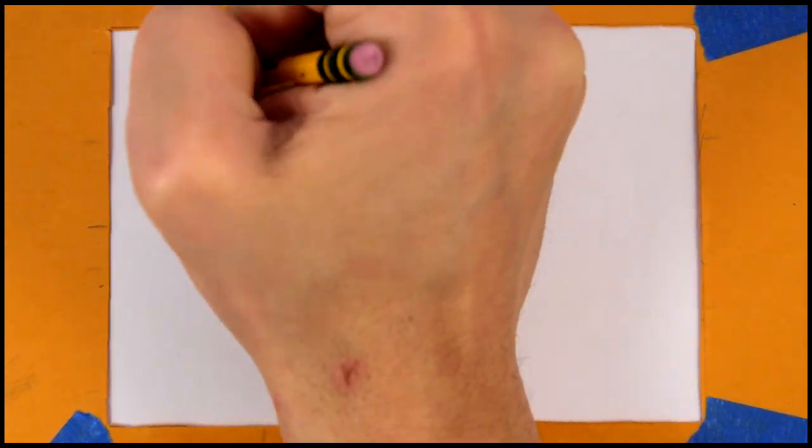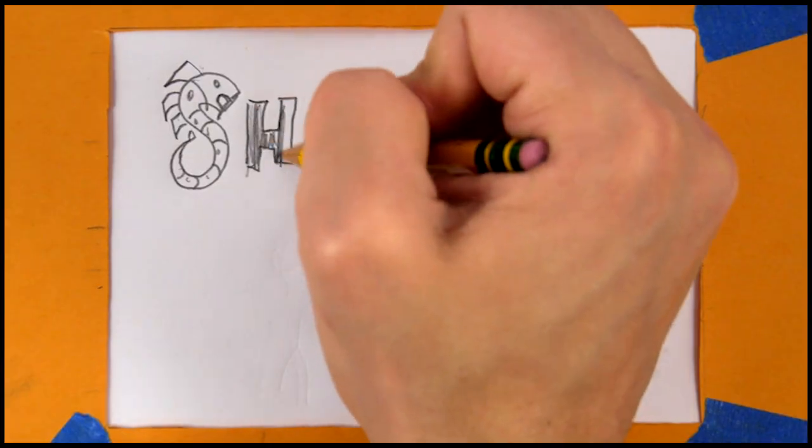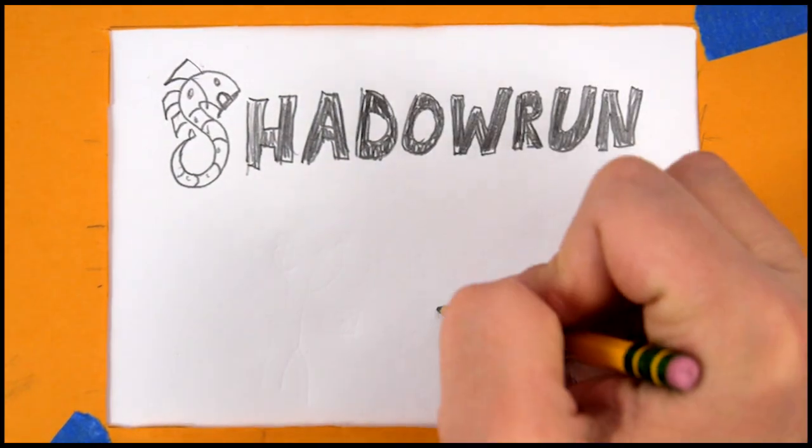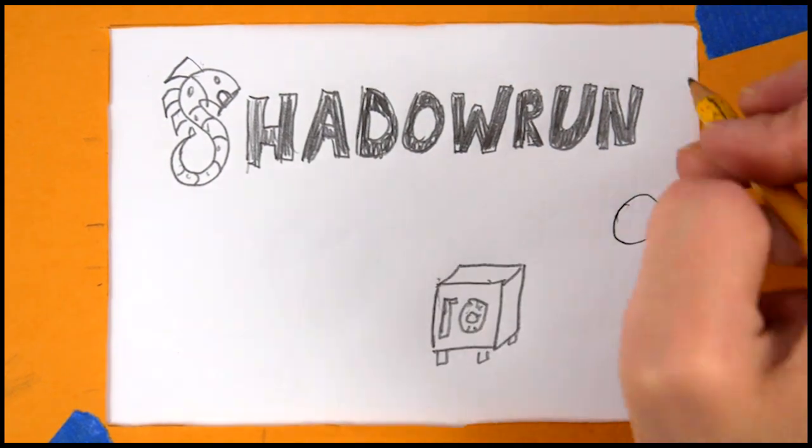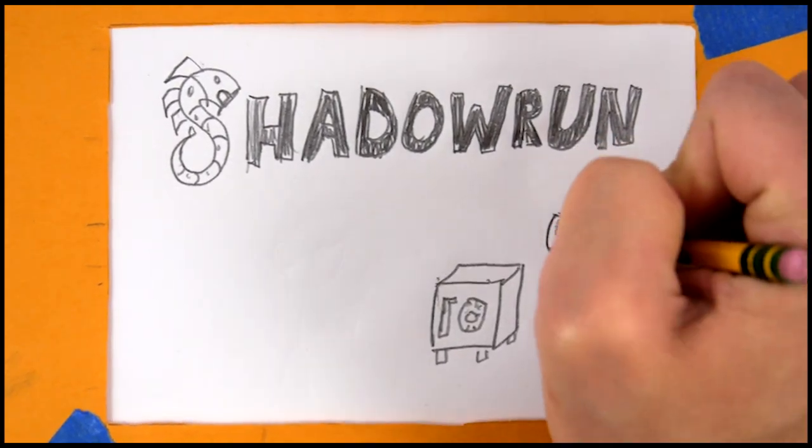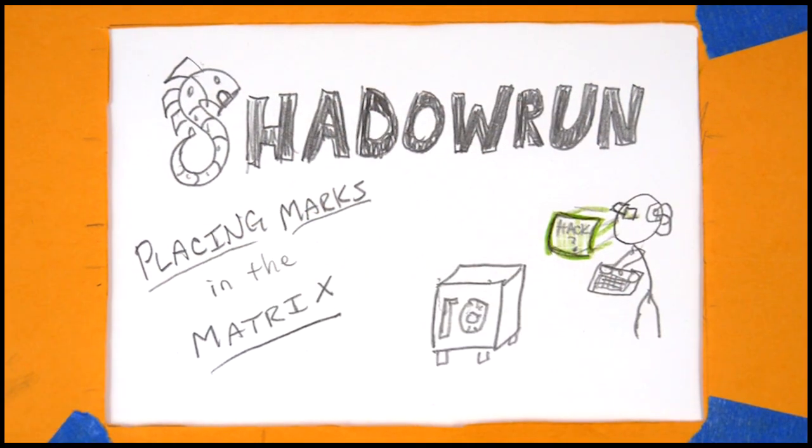In Shadowrun 5th edition, the Matrix controls access to the various pieces of private data or sensitive locations. However, some would seek to undermine the security protocols in order to gain the keys to this access. If you are one of them, then you will need to understand the rules of placing marks in the Matrix.